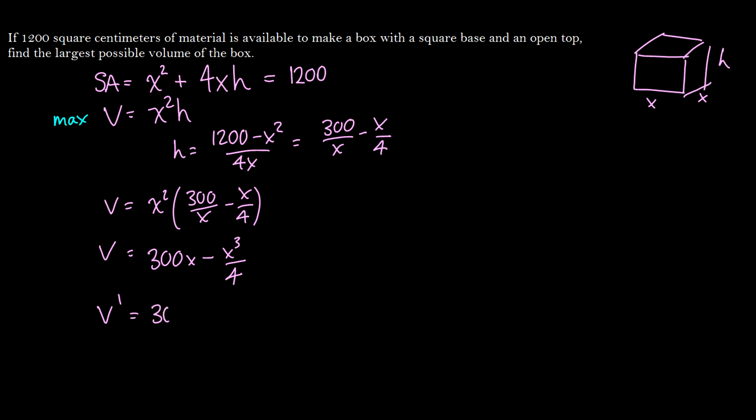So we're going to get 300 minus 3x squared divided by 4. What we should do now is we should solve for x by setting v prime to equal 0.